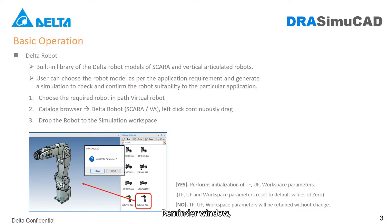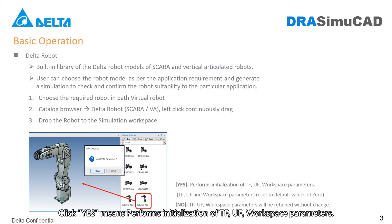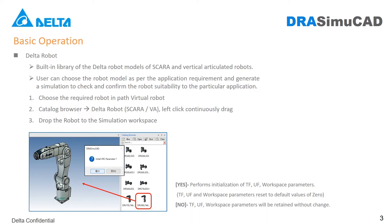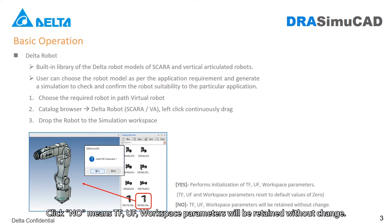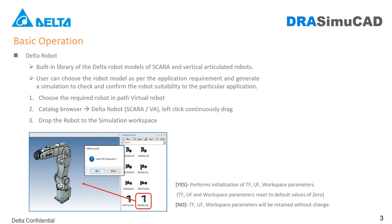Reminder window: Click Yes means performs initialization of TF, UF, and workspace parameters. Click No means TF, UF, and workspace parameters will be retained without change. Demo video as follows.